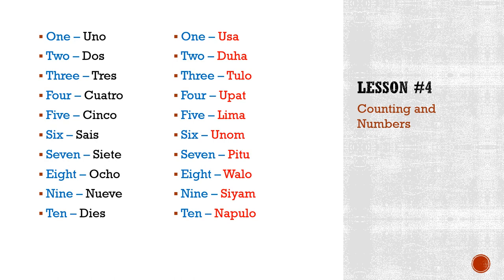For twelve, we say napulo ug duha — ten and two. For thirteen: napulo ug tuluh. For nineteen: napulo ug siyam.